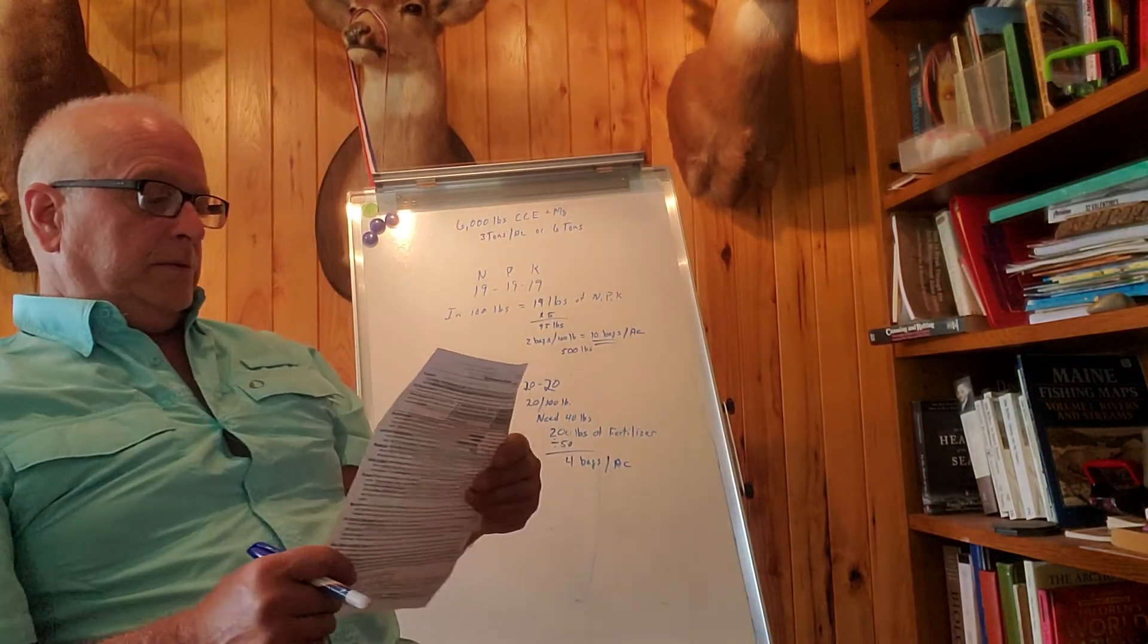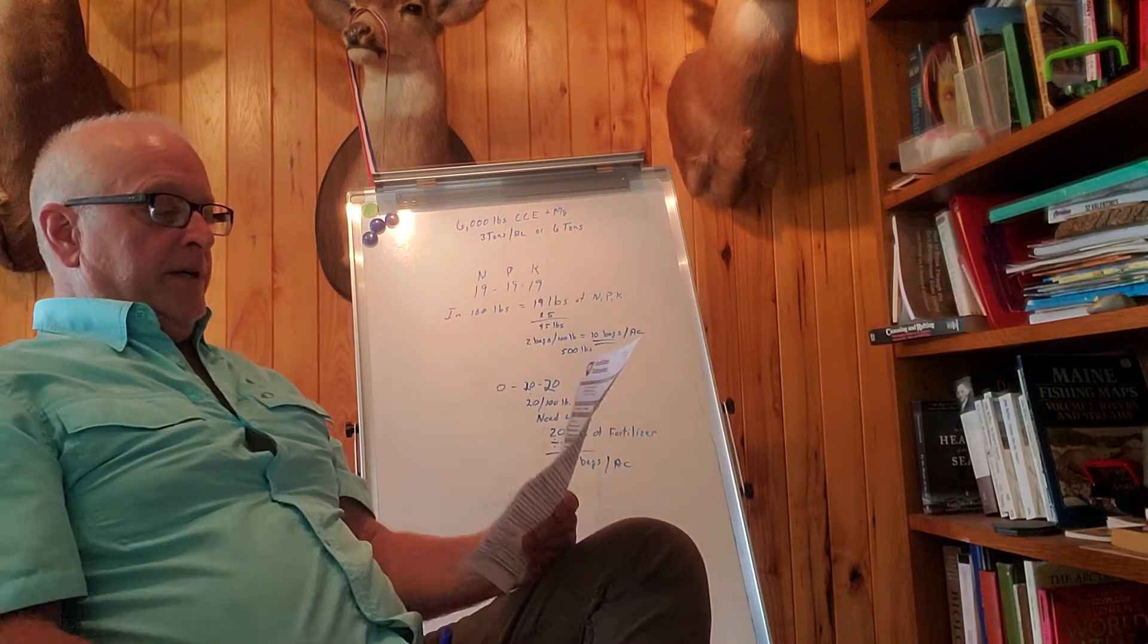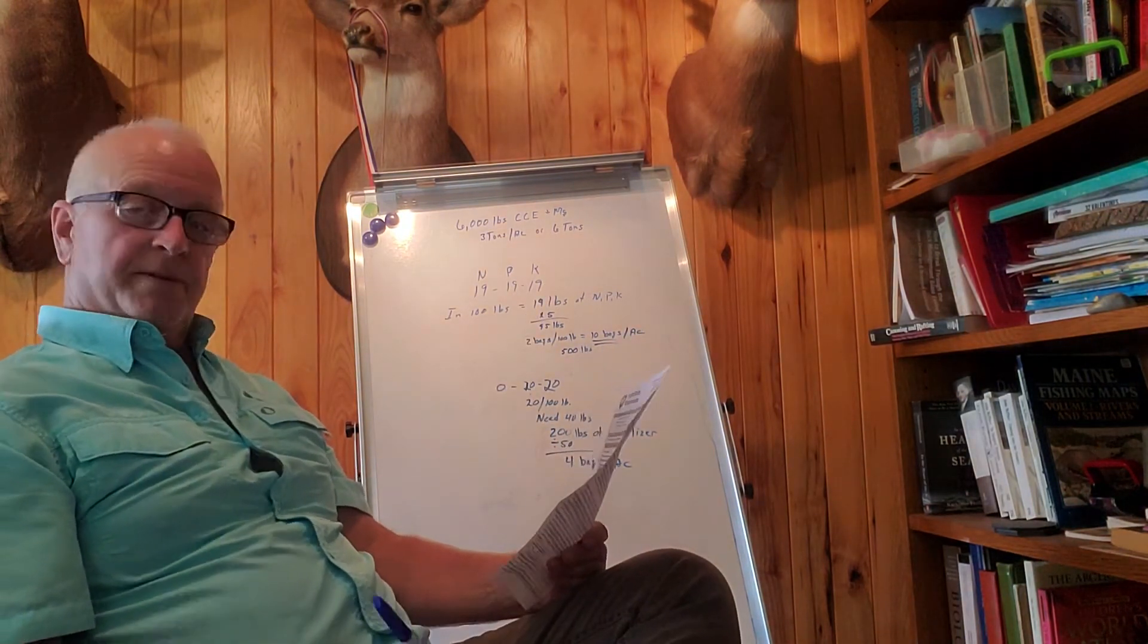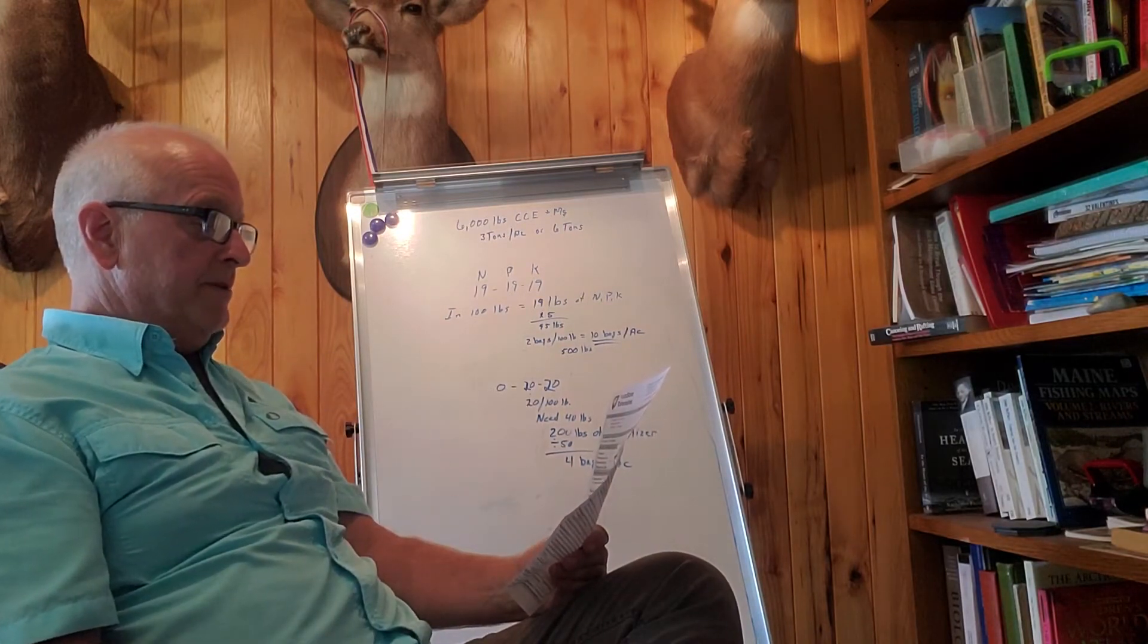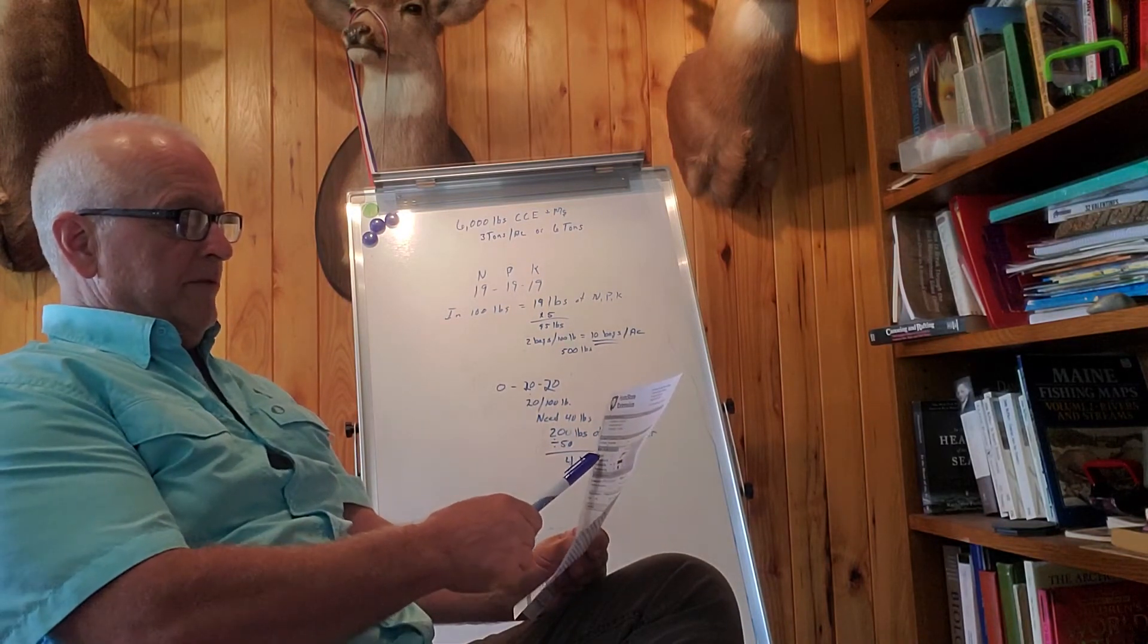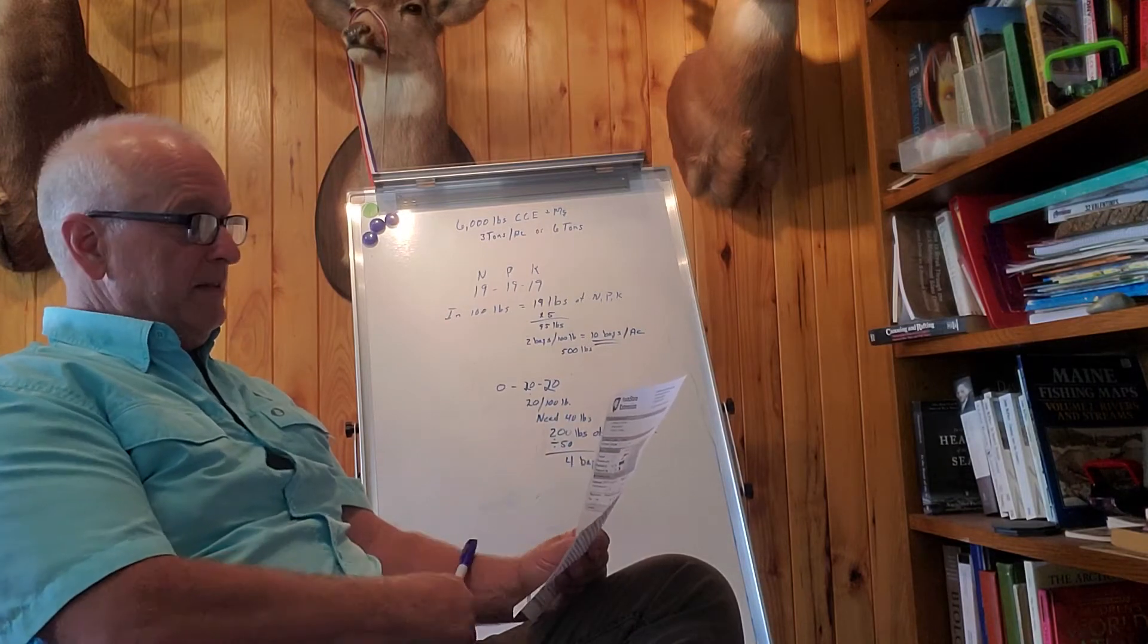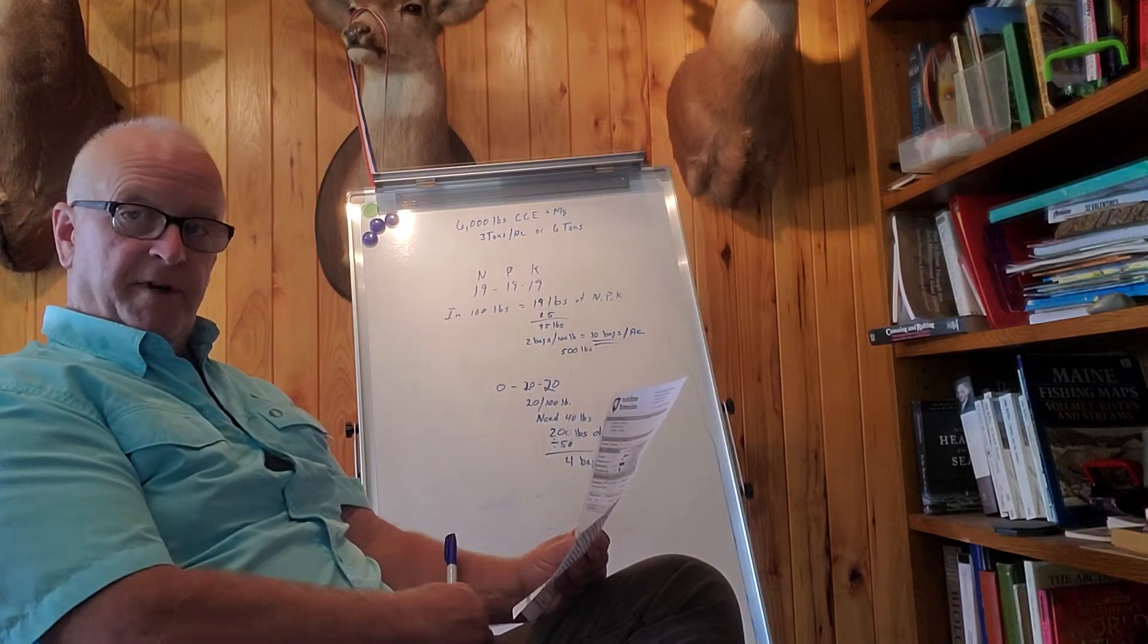Going over this thing, I see that we have some pretty acid soils. It's a new food plot just scratched out of the forest, and the first and foremost thing that we have to take a look at is that soil pH, which is 5.3.